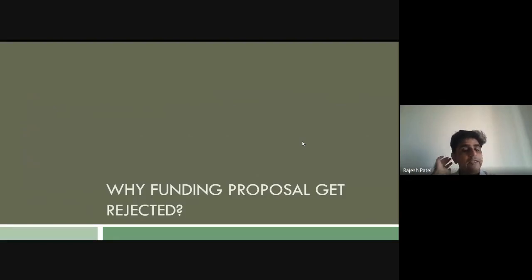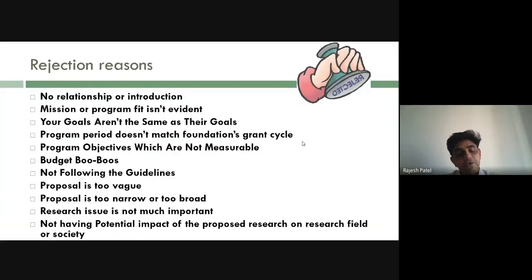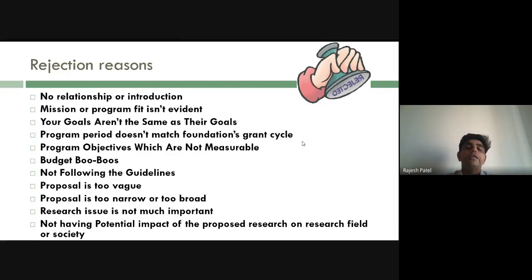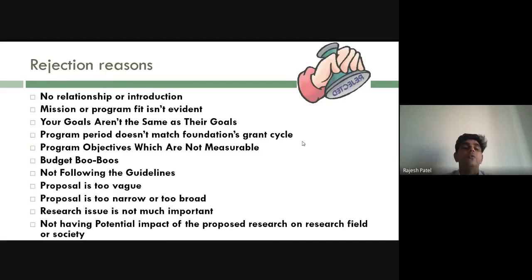Now let's discuss common reasons why funding proposals get rejected. First, there is no good introduction or relationship established. When writing a proposal, you have to sell yourself. The evaluator may be an expert with much background who loses interest, or a non-expert who has no context at all. You must build rapport with the assessor and develop the proposal in a way that keeps them interested, even a layman.